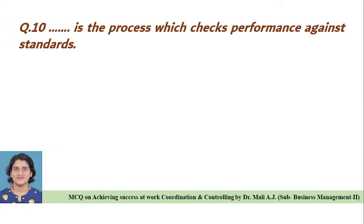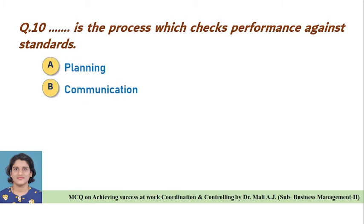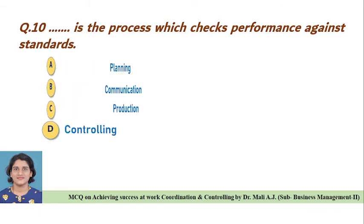Question ten: Dash is the process which checks performance against standards — Option A: planning, Option B: communication, Option C: production, Option D: controlling. Correct answer is Option D, controlling is the process which checks performance against standards.